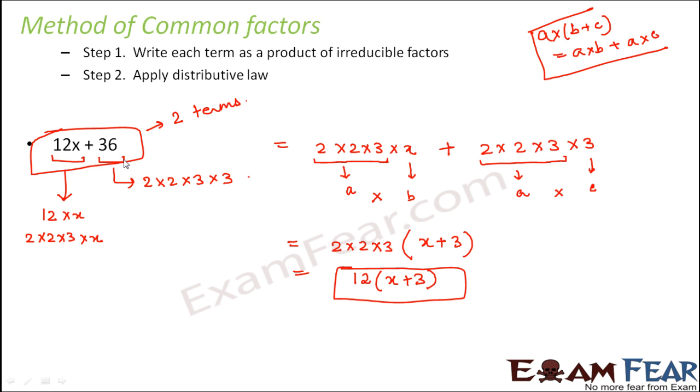But when you look at this, this expression has only one term. What are the factors? 12 is one factor and x plus 3 is another factor. This is the factor form of the expression. In this fashion, we can factorize a given algebraic expression.